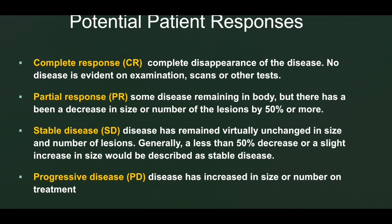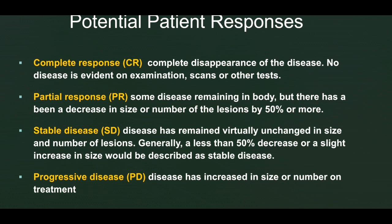Partial response means more than 50% decrease in disease. Stable disease means a very small percentage of response, less than 50% decrease, or a slight increase in the size of the mass. Progressive disease means an increase in size and number of lesions while on treatment — for example, if a patient on chemotherapy develops new lesions away from the site of origin, this is progressive disease.